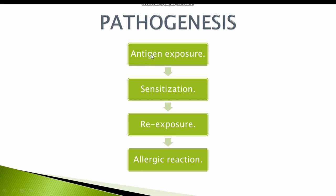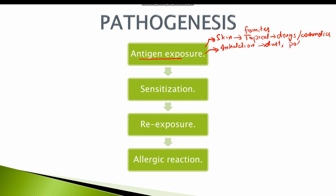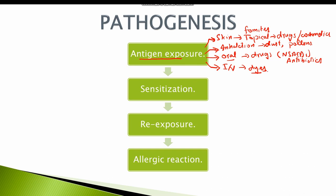The outline of the pathogenesis includes exposure to the antigen. Antigen exposure could be through the skin, such as fomites which include clothing, towel, and bed sheets. Certain topical creams such as drugs or cosmetics. A person can also be exposed through inhalation, such as dust and pollens in asthma. Oral intake of certain foods such as peanuts, and drugs such as NSAIDs and antibiotics, can also act as antigens. IV administration of certain drugs such as NSAIDs and dyes for radiological investigations.